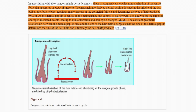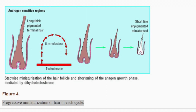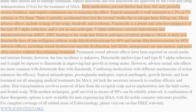This imbalance favors the telogen resting phase over anagen growth and worsens the appearance of thinning hair. Additionally, the condition causes a stepwise miniaturization of the hair follicles, driven by dihydrotestosterone, also known as DHT. This process results in the follicles producing progressively finer and shorter hairs with each growth cycle. Over time, these hairs may fail to penetrate the skin's surface, leading to visible thinning and balding areas on the scalp. The authors emphasize that while treatments like minoxidil and finasteride can manage these symptoms, they require continuous use.